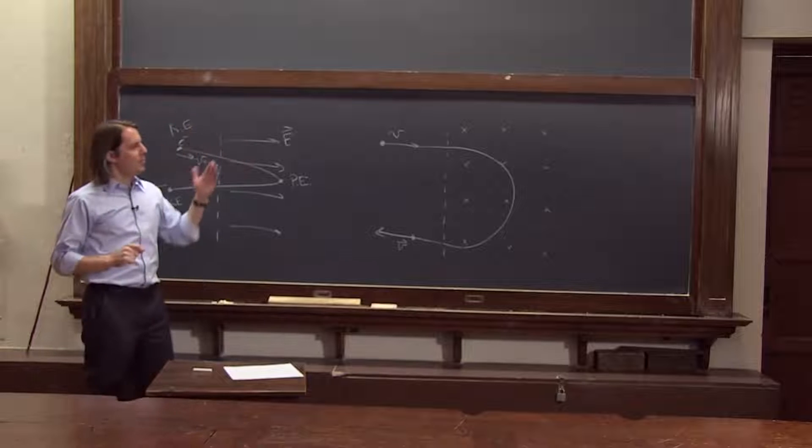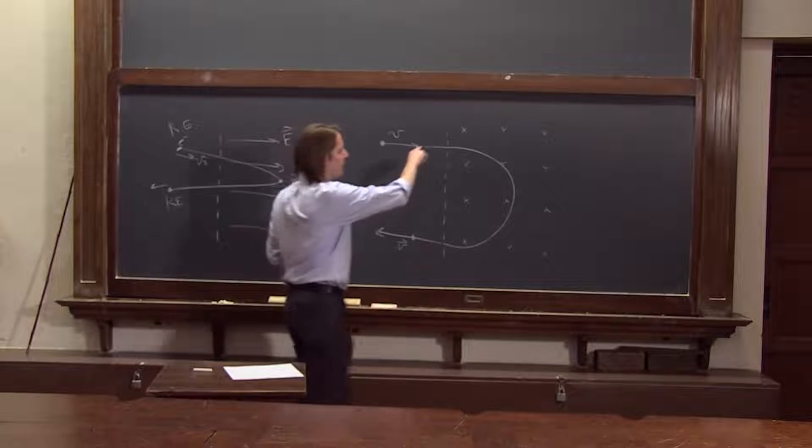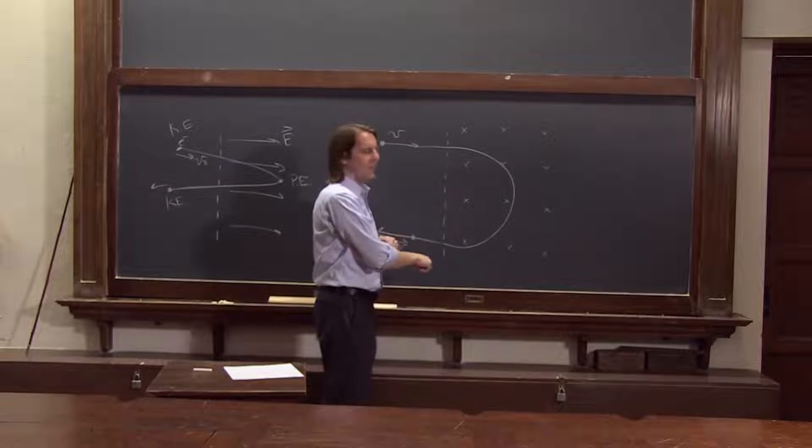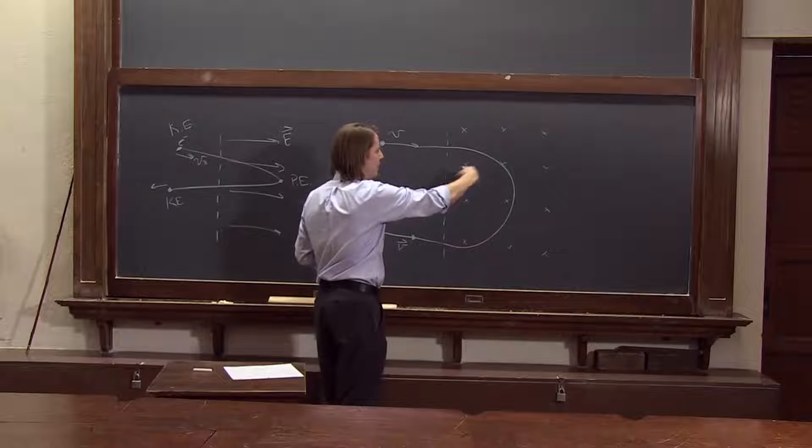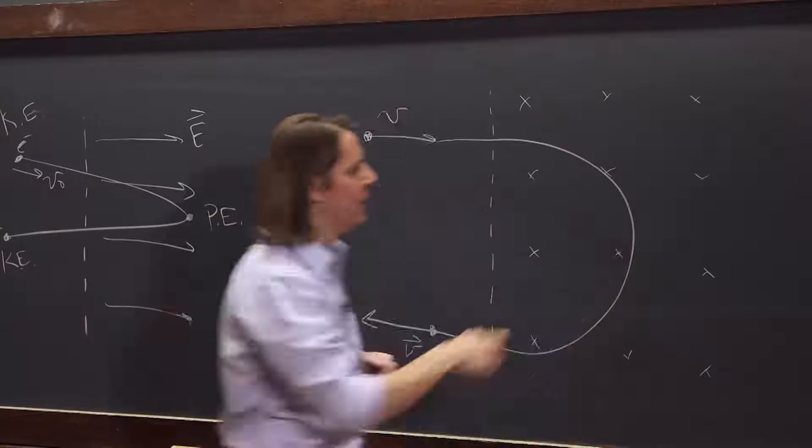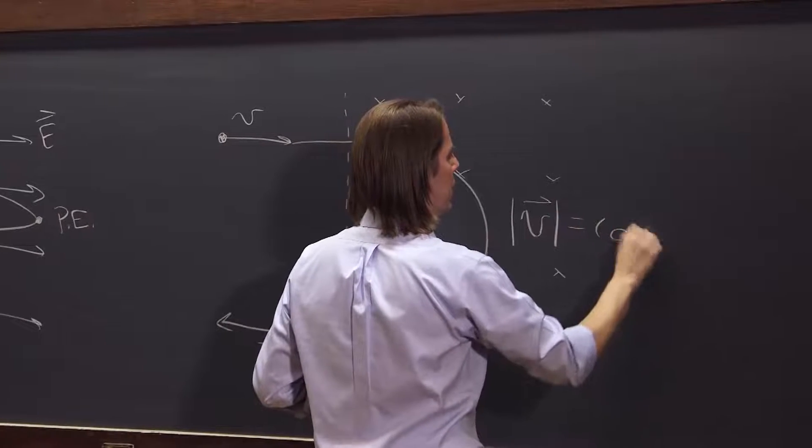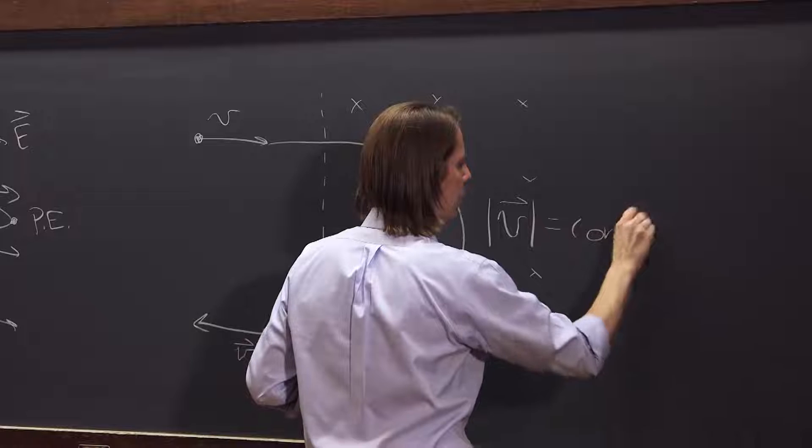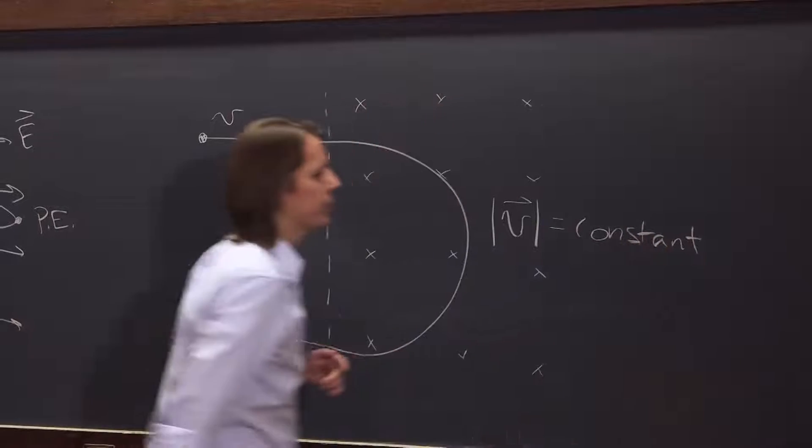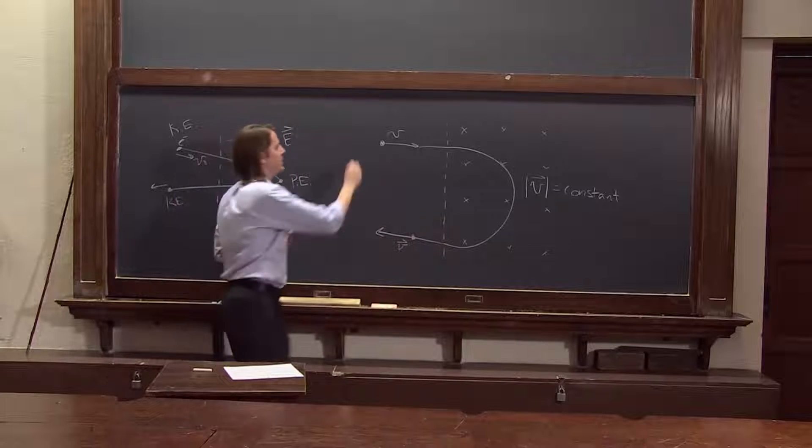So let's think about what happens to the particle's energy as it goes through here. Well, it's going through uniform circular motion. The force is always perpendicular to the velocity. So actually, the magnitude of the velocity is constant. So basically, you never lose any kinetic energy.